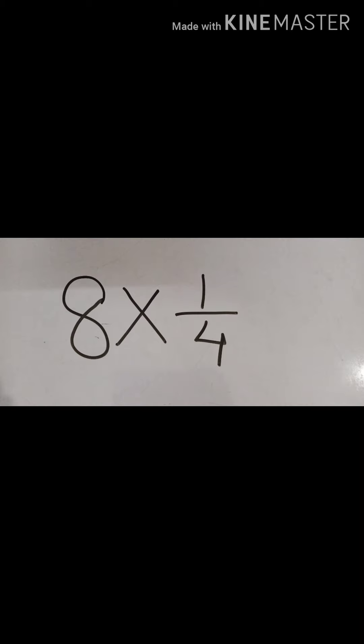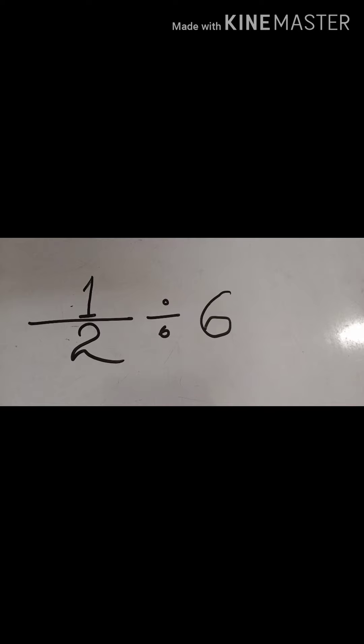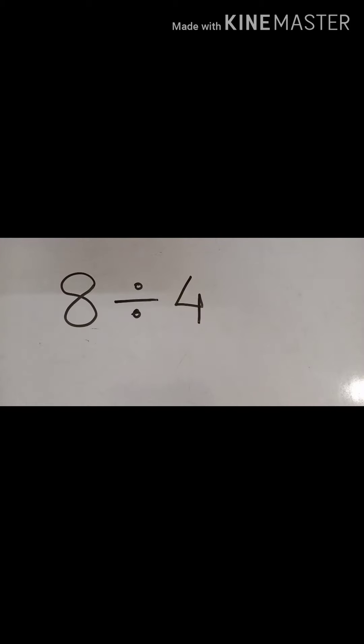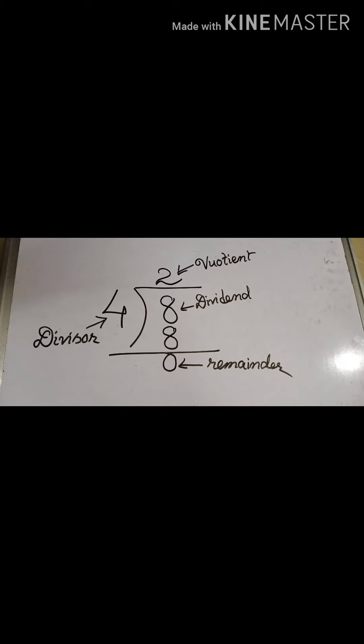We will follow the same technique here. When we say half divided by 6, the number by which we are dividing is 6. Recall the basic division rule: when we divide 8 by 4, four goes into eight, remainder is zero. Here, 4 is the divisor, 8 is the dividend, 2 is the quotient, and 0 is the remainder — these are the important terms.